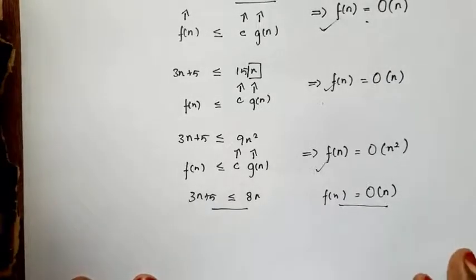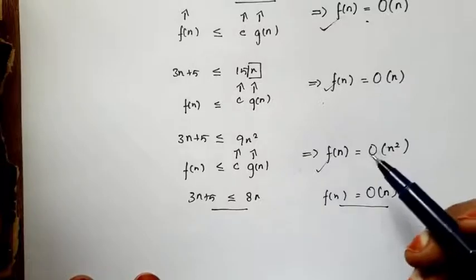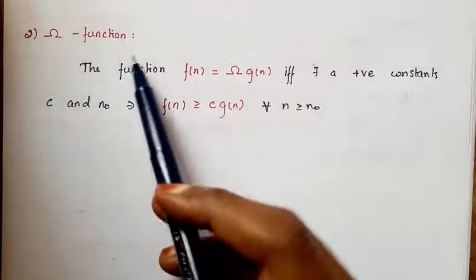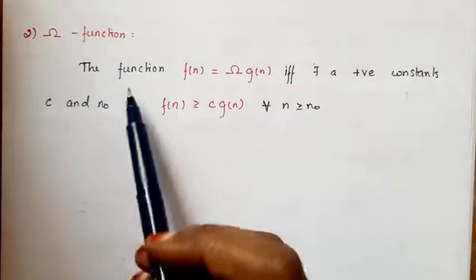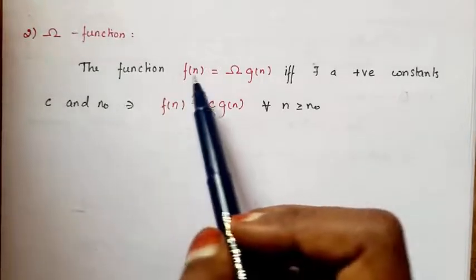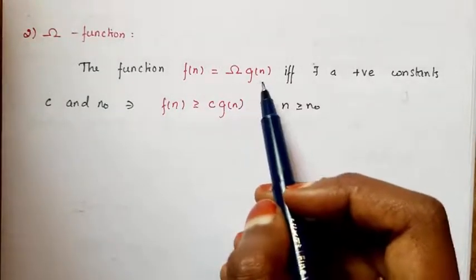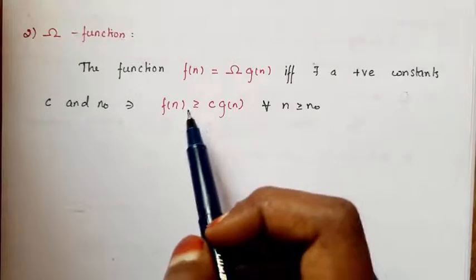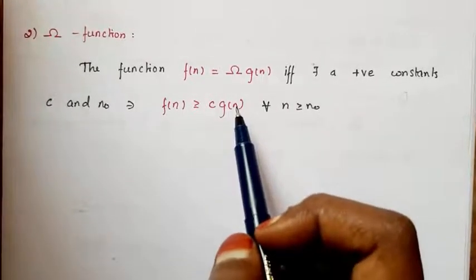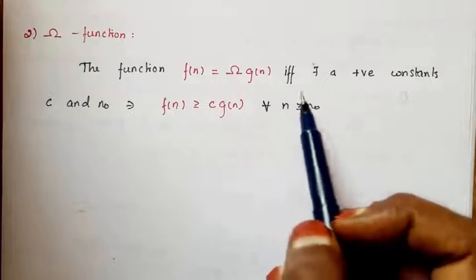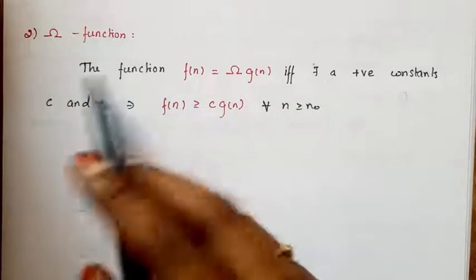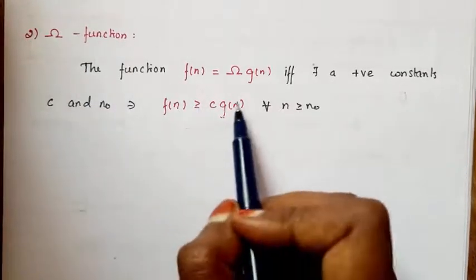This is Big O notation — very easy to identify. Next we will see Big Omega notation, which works as a lower bound of a function. As per the definition, f(n) is equal to Big Omega of g(n) if and only if there exist positive constants c and n-naught such that f(n) is greater than or equal to c times g(n) for all n greater than or equal to n-naught. In Big O, the condition is f(n) ≤ c·g(n); for Big Omega, the condition is f(n) ≥ c·g(n).